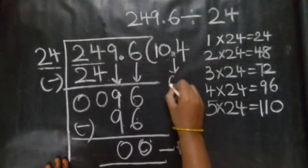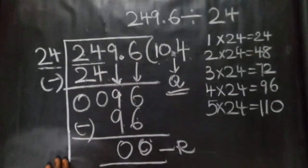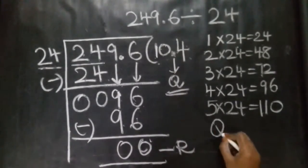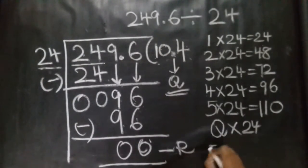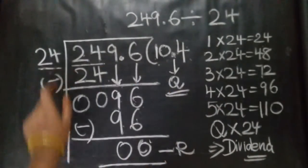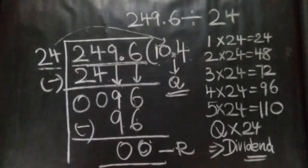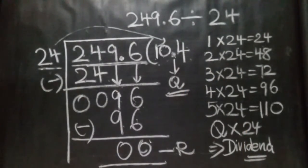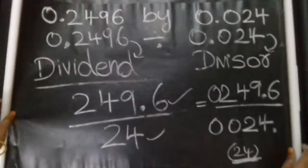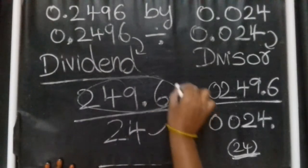So this is your remainder — zero. Your quotient is 10.4. This is your answer for 249.6 divided by 24. Now if you check this question, you can verify using the formula: quotient times divisor equals dividend. So 10.4 times 24 equals 249.6 — your answer is correct. This is the method for division of a decimal number by a decimal number. You convert the divisor to a natural number and move the decimal point the same steps to the right in the dividend.